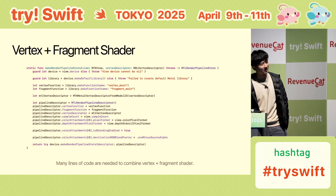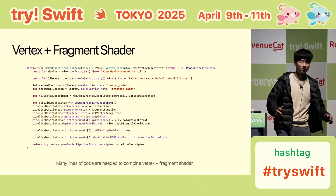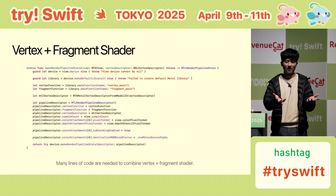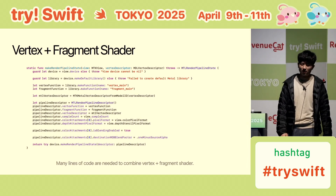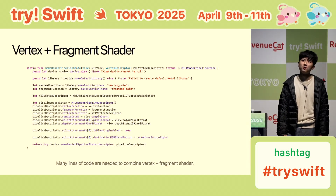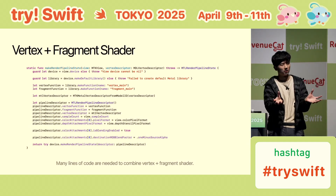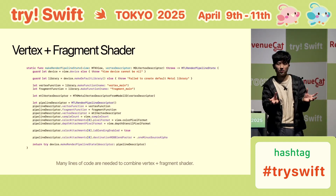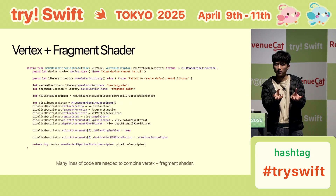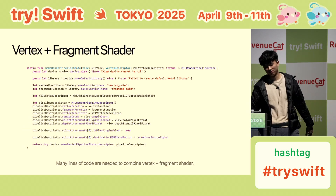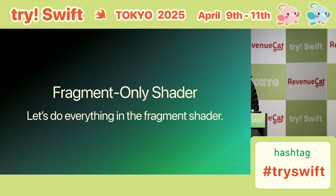The downside of this technique is there's a lot of code — a lot of boilerplate combining the vertex and fragment shaders. And let's say you want to make two cubes — you could copy-paste the code, but what if you want to merge them with a metaball effect? That's very hard with vertex shaders because it's all about faces. So what we're going to do today is a fragment-only shader.